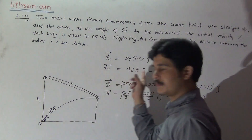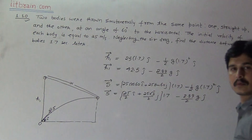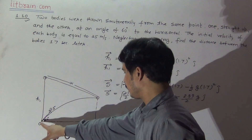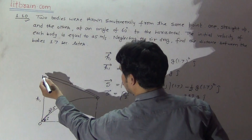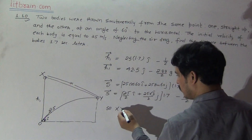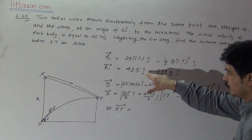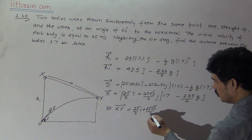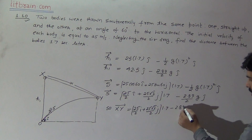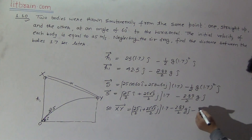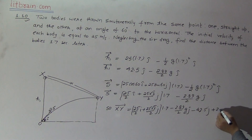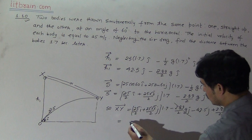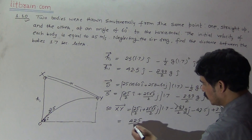This is the position of the second particle and this is the position of the first particle. For finding the distance between them, we use the distance formula. If the first particle is at point X and the second at point Y, then the vector XY = position of Y minus position of X. That gives us (25/2·i + 25√3/2·j)×1.7 − (2.89/2)·g·j, minus 42.5·j plus (2.89/2)·g·j. Cancelling the gravity terms: (25×1.7/2)·i = 42.5/2·i.